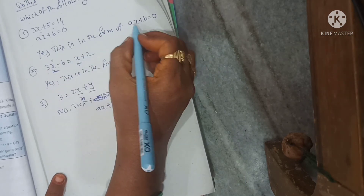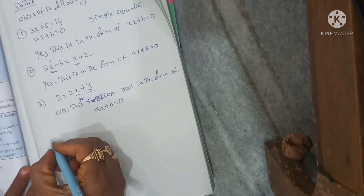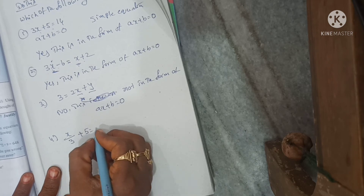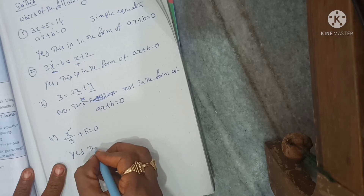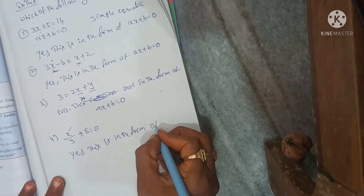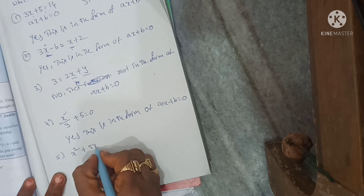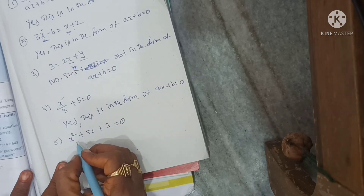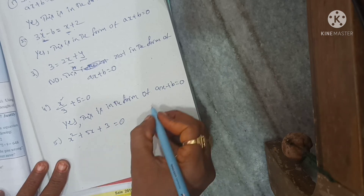The form AX plus B is equal to 0 is the simple linear equation. Fourth one: x divided by 3 plus 5 is equal to 0. Here there is only one variable, so yes, this is in the form of AX plus B is equal to 0. Fifth one: x² plus 5x plus 3 is equal to 0. This is no — not in the form of AX plus B is equal to 0.